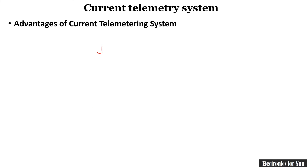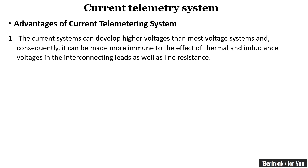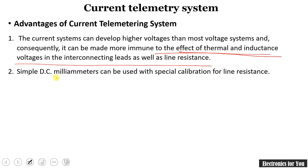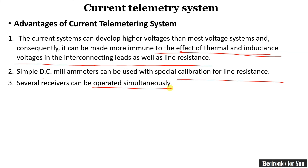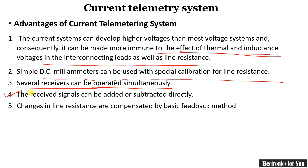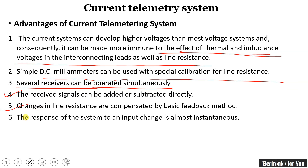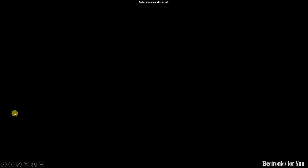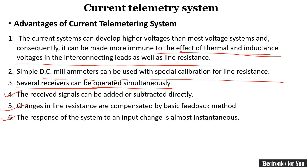The advantages of the current telemetry system are: it is immune to the effects of thermal and inductance voltage in the interconnecting leads as well as line resistance. A simple DC millimeter can be used with special calibration of line resistance. Several receivers can be operated simultaneously. The received signal can be added or subtracted directly. Changes in line resistance are compensated by the basic feedback method. The response of this system to input is almost instantaneous.